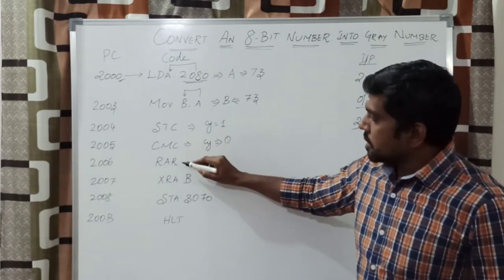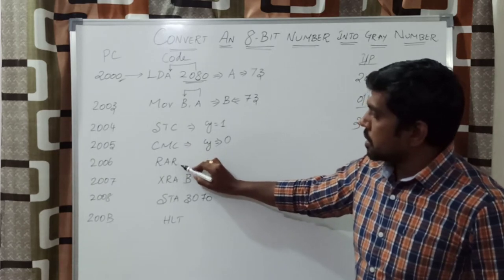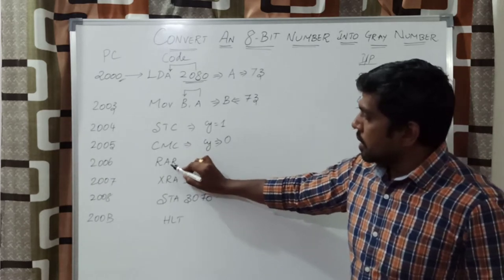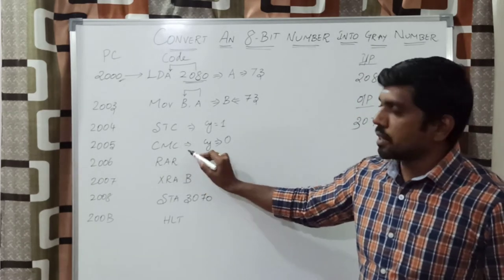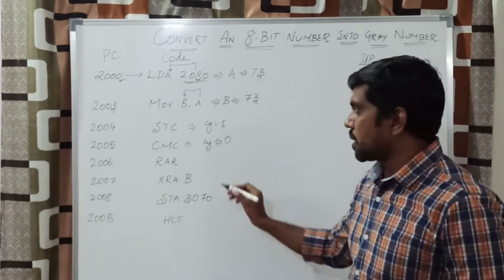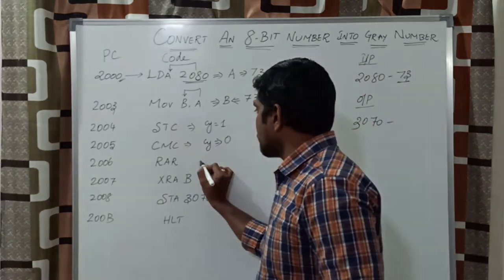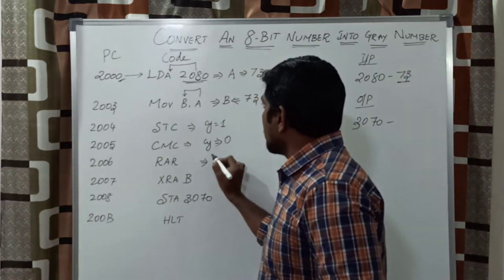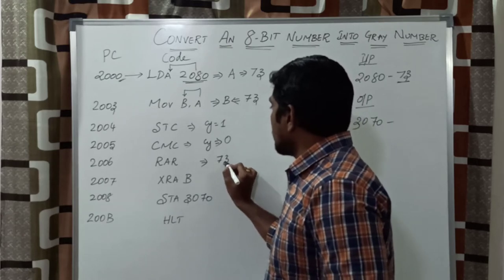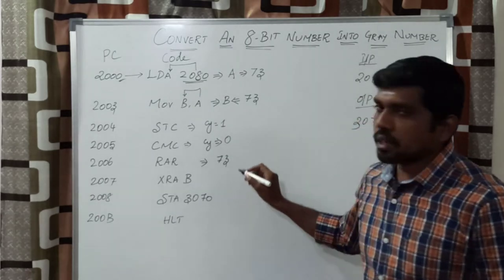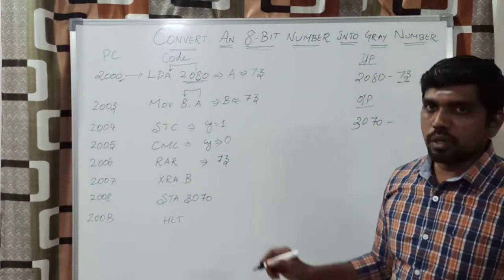The next instruction is RAR — Rotate Accumulator Right. RAR rotates the accumulator content in the right direction with the carry value; you consider the carry value also. Here the accumulator content is 73, and you rotate the content in the right direction one time.